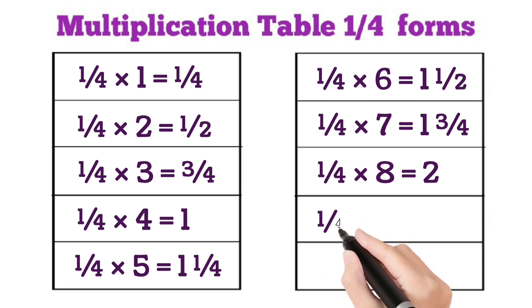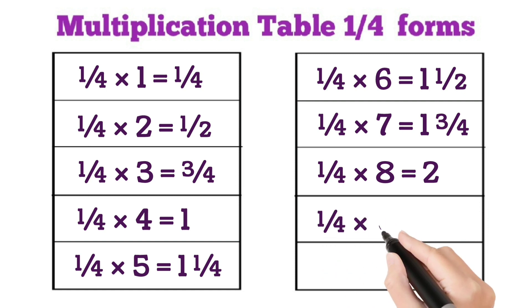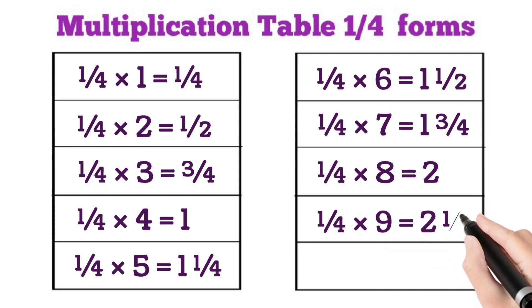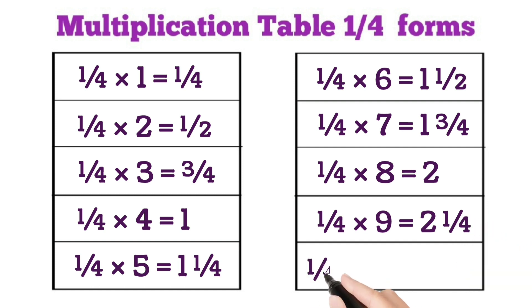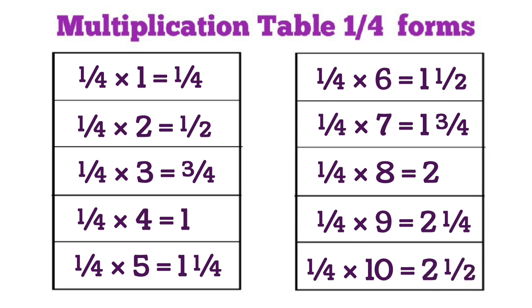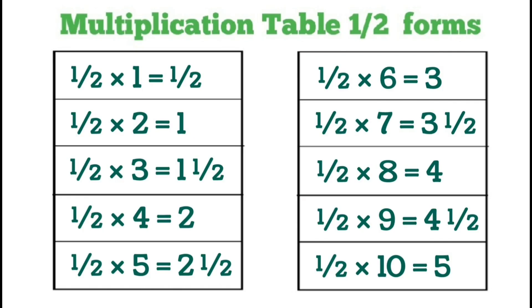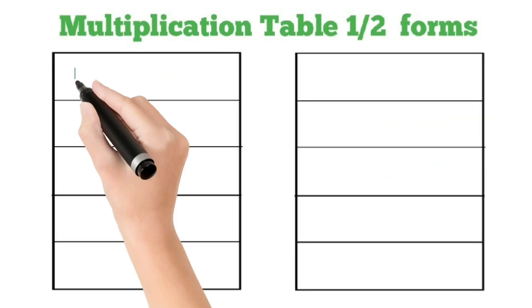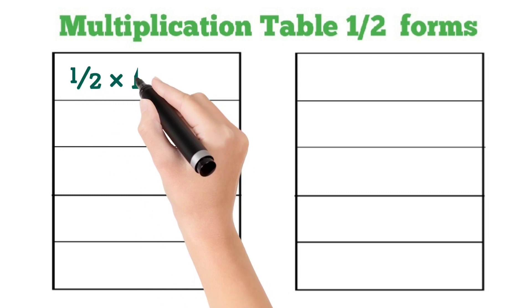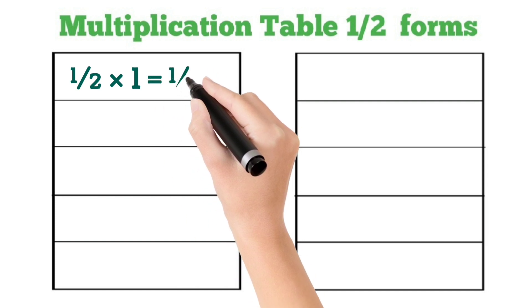1 by 4 multiplied by 9 is equal to 2 and 1 by 4. 1 by 4 multiplied by 10 is equal to 2 and 1 by 2.